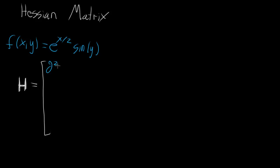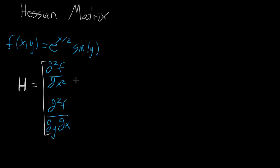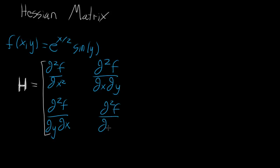The first component is the partial derivative of F with respect to x, twice in a row. Everything in the first column is where you first differentiate with respect to x. The next entry is the second derivative where first you do it with respect to x, then with respect to y. That's the first column. Then the second column starts with the partial derivative where first you do it with respect to y, then x, and then the entry where you do it with respect to y both times in a row.